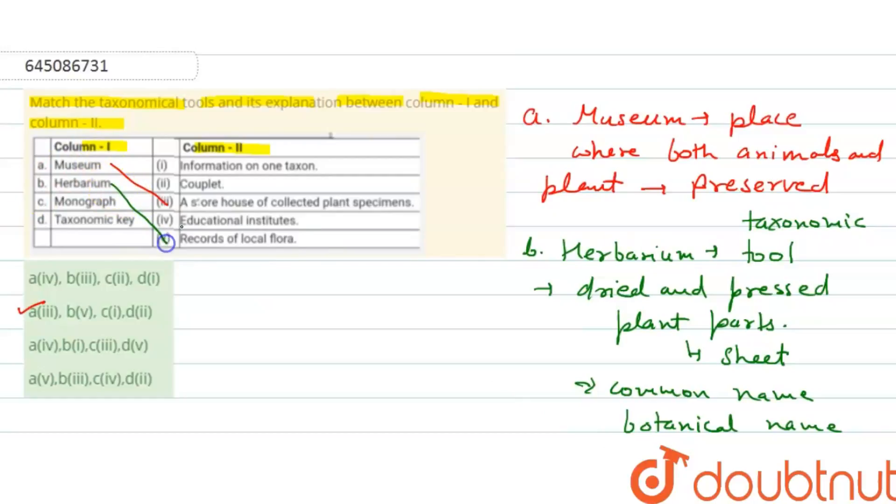Now the C option, that is monograph. It is a comprehensive system, a detailed study of a particular taxonomic group.